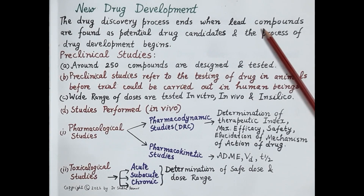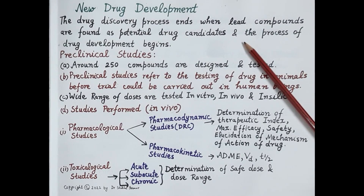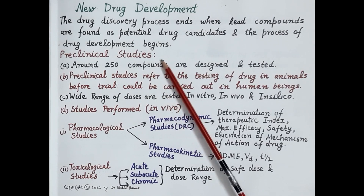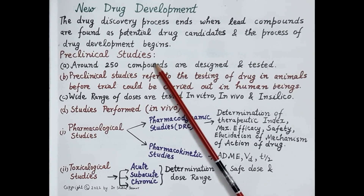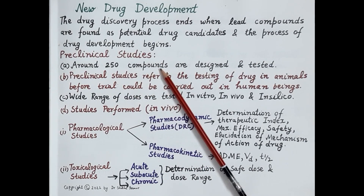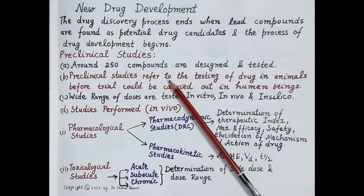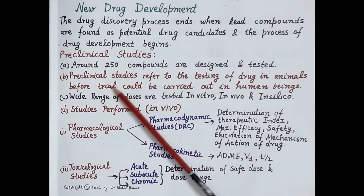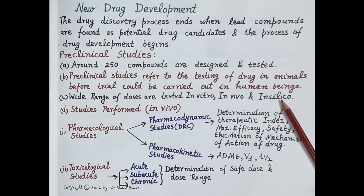The first step in new drug development is preclinical studies. Around 250 compounds are designed from the lead optimization process, and these are tested through preclinical studies. Preclinical studies refer to the testing of a drug in animals before trials can be carried out in human beings. A wide range of doses are tested in vitro, in vivo, and in silico.